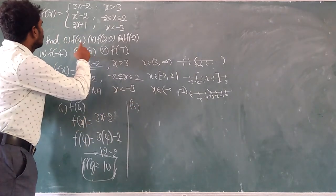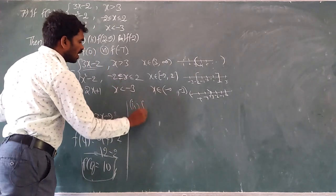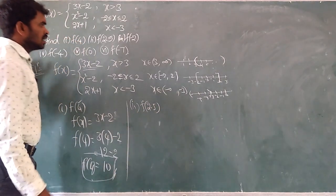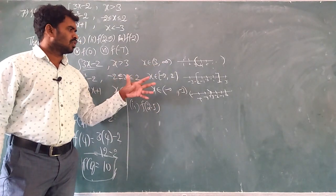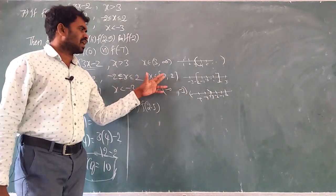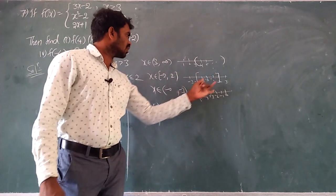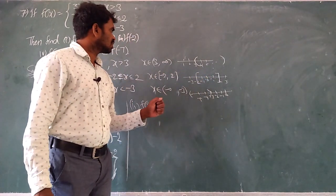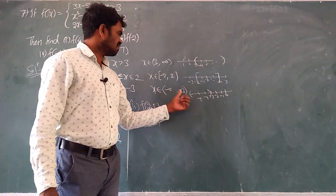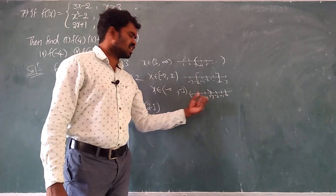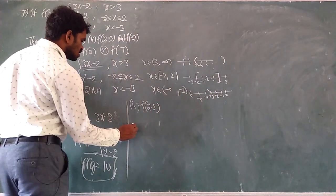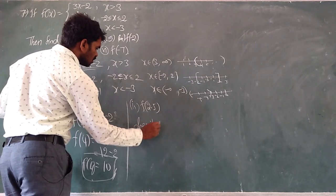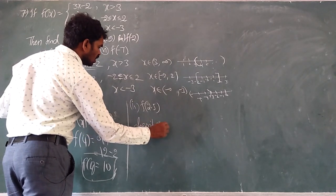Next, second one: f of 2.5. Does 2.5 come under x greater than 3? No. Between minus 2 and 2? No. Less than minus 3? No. Then it does not exist.